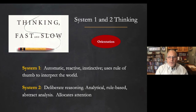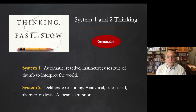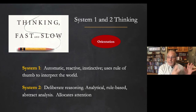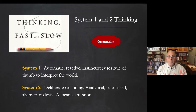A systems thinking approach was developed by Daniel Kahneman, a Nobel laureate in economic sciences and the author of the book Thinking Fast and Slow. He makes an important distinction in cognitive bias between level one thinking, which is automatic, and level two thinking, which is conscious.